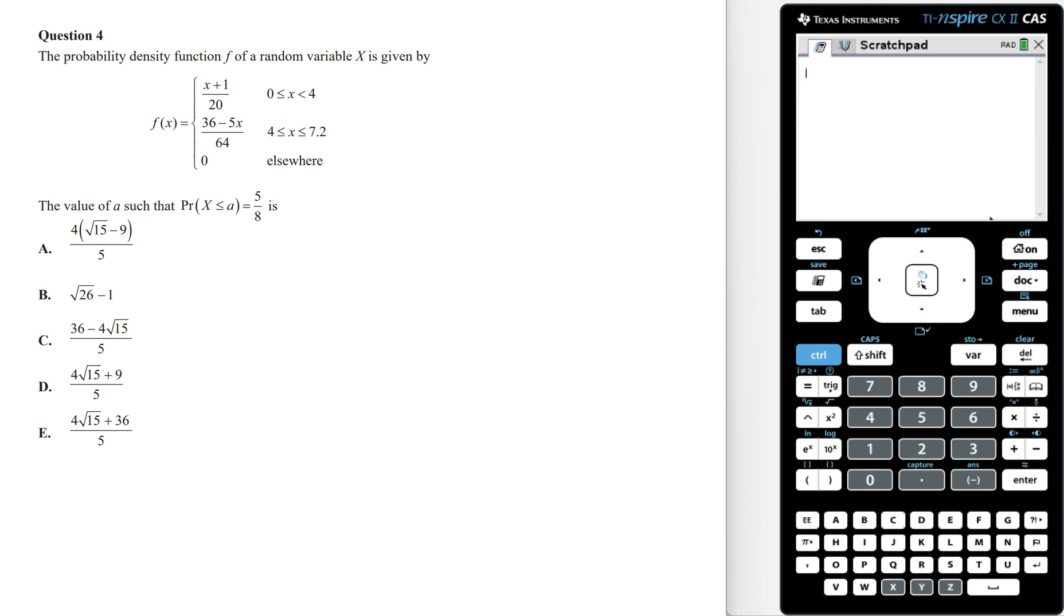In this video I'm going to show you how to answer the 2023 maths methods sample exam question 4. We've got the probability density function f of a random variable x given by f of x. The value of a such that the probability that x is less than or equal to a equals 5 on 8 is?